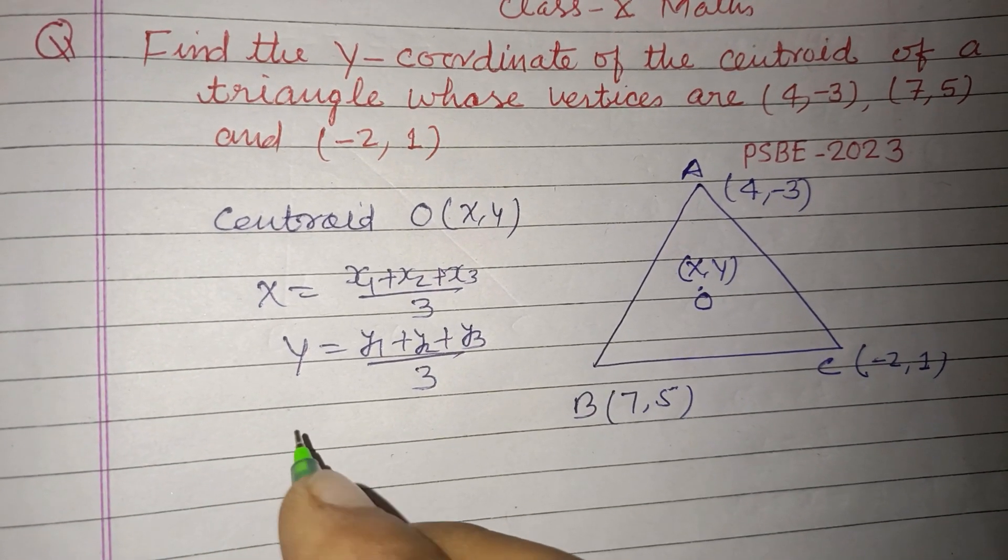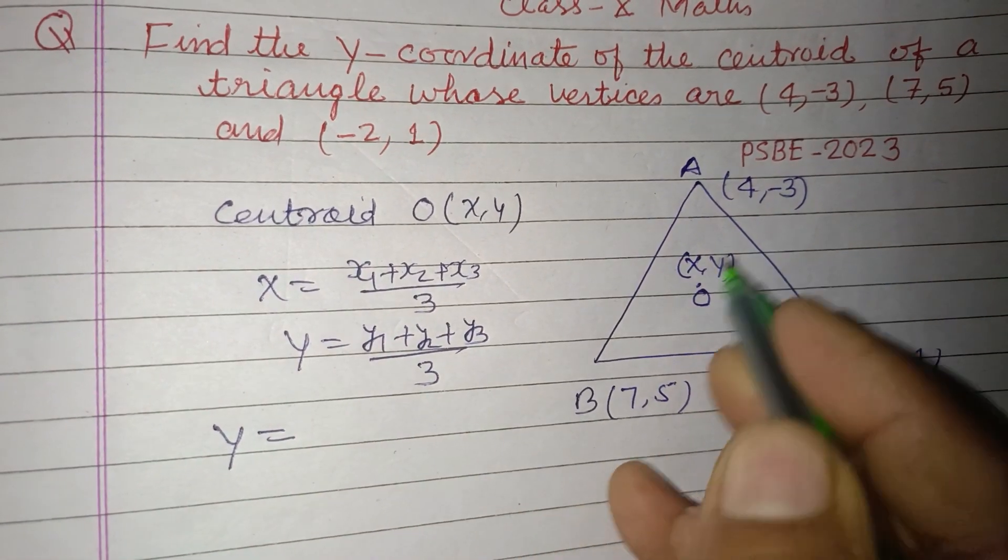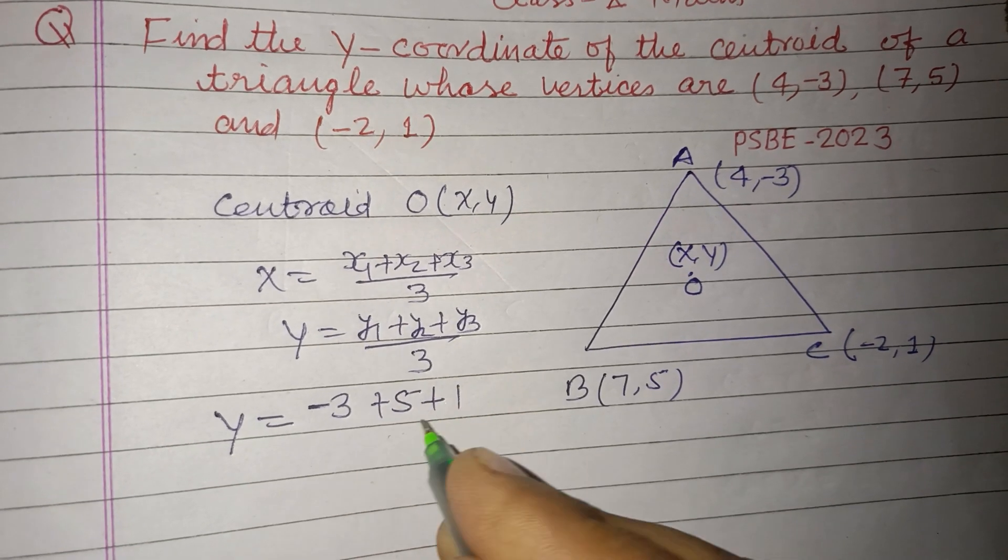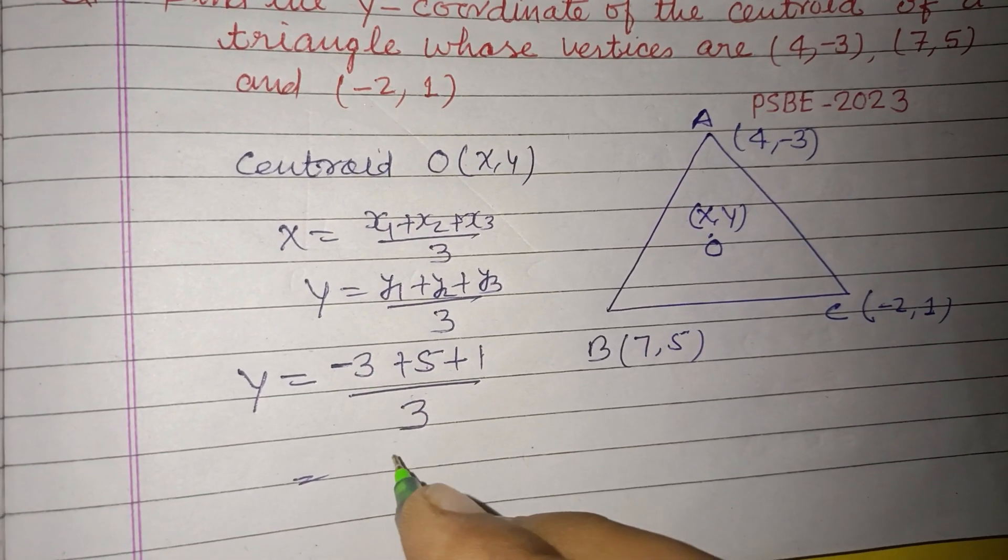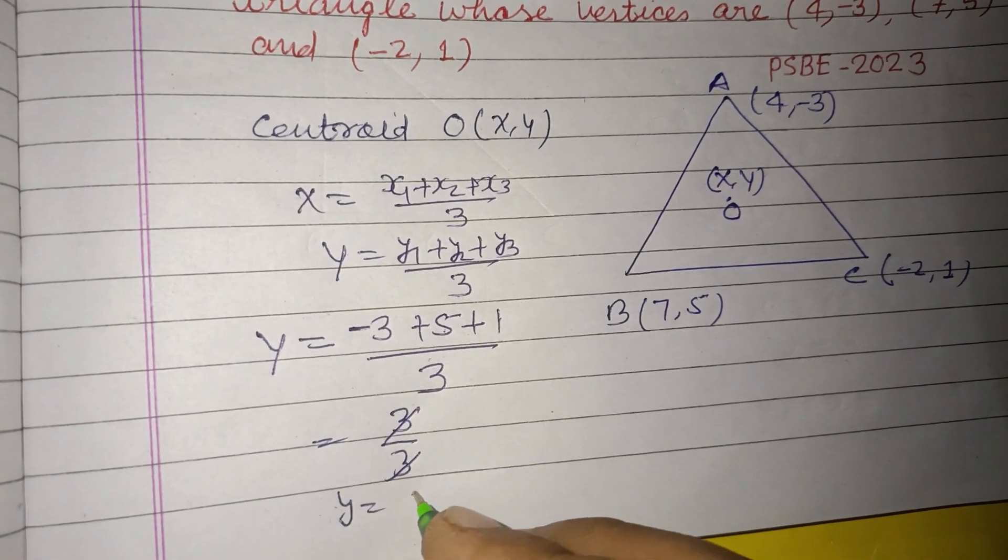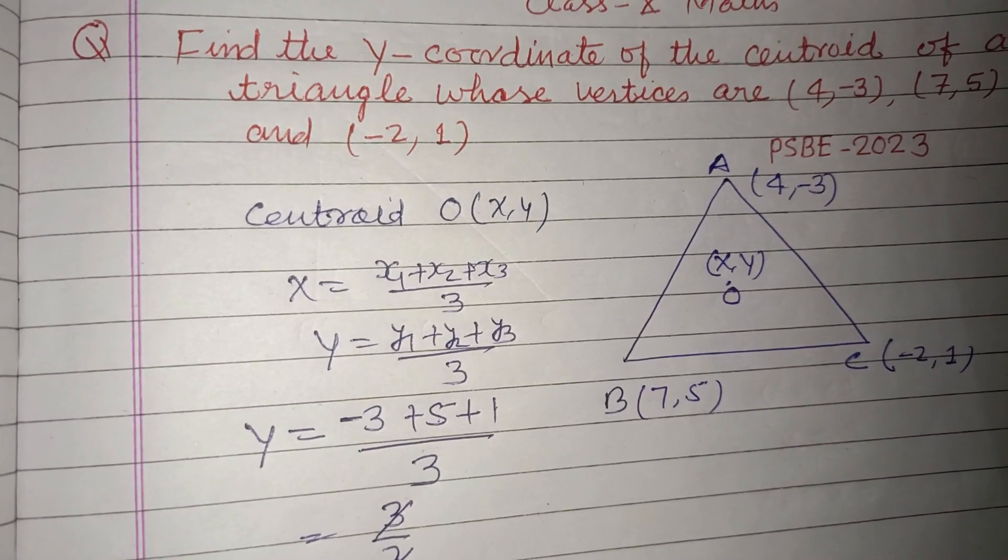We only need to find the y-coordinate, so y = (y₁ + y₂ + y₃)/3. Here y₁ = -3, y₂ = 5, and y₃ = 1. So y = (-3 + 5 + 1)/3 = 3/3 = 1. Therefore, the y-coordinate is 1.